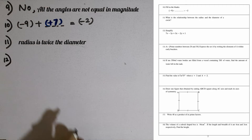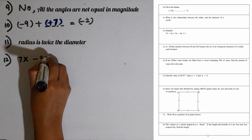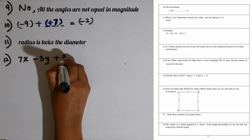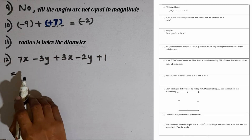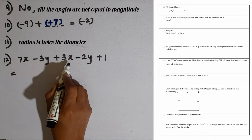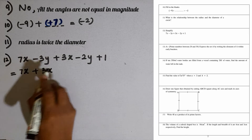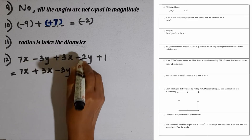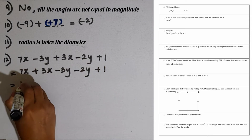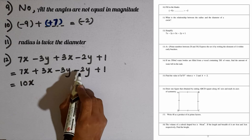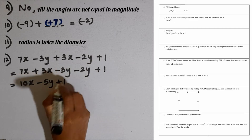Question number 12. We are given this to simplify: 7x minus 3y plus 3x minus 2y plus 1. We write the like terms together. 7x and 3x are like terms, so 7x plus 3x. And the y terms together: minus 3y and minus 2y, plus 1. 7x plus 3x is 10x. Then minus 3y plus minus 2y is minus 5y. The final answer is 10x minus 5y plus 1.